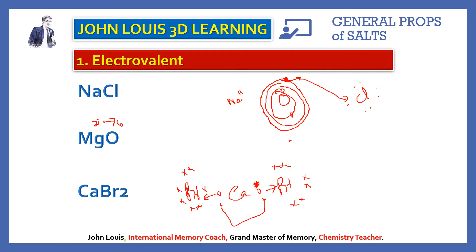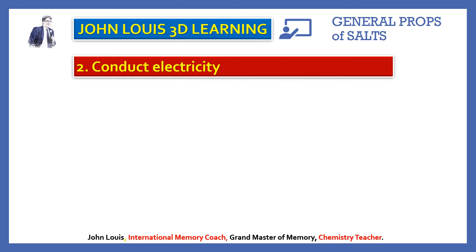Almost all salts are electrovalent in nature — electrovalent means ionic bond. Now for the second property: they conduct electricity. How can you prove this?